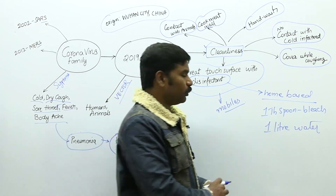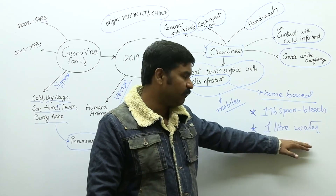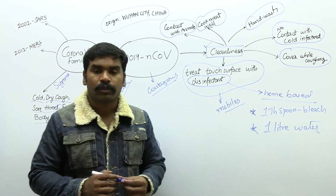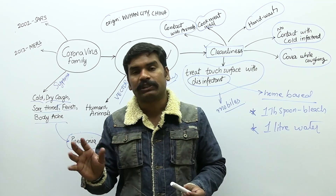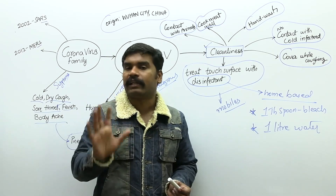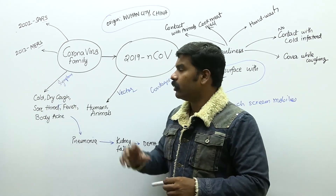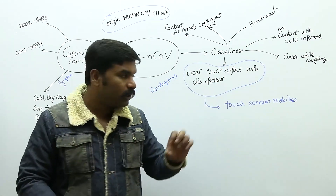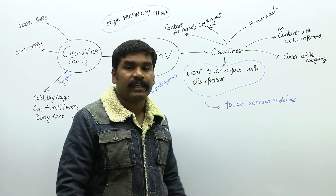Take one tablespoon of bleaching powder and mix it with one liter of water — the solution you obtain is the best disinfectant; it can kill almost any bacteria and control any virus. Use it to clean your door knobs, bathroom doors, house doors, computer and laptop keyboards, and mobile phone screens. Try to maintain touching surfaces sterile and clean. These are the steps you may take to keep yourself safe from this virus. Please share this video with your friends and family to alert them. Thank you for watching and stay safe.